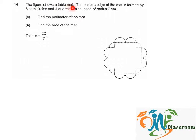The figure shows a table mat. The outside edge of the mat is formed by 8 semicircles and 4 quarter circles, each of radius 7 cm.